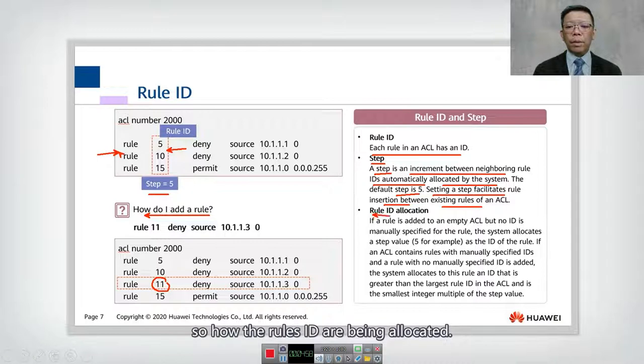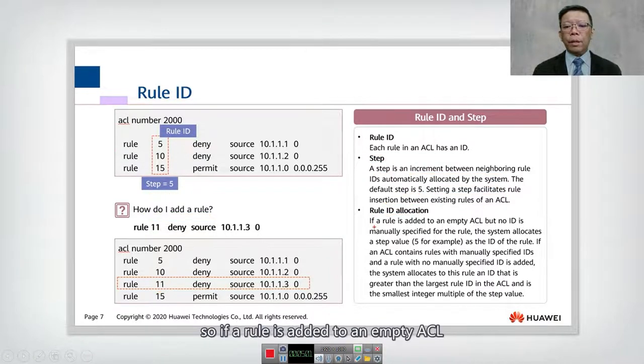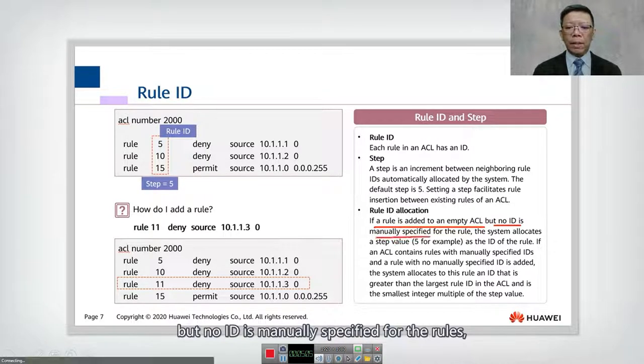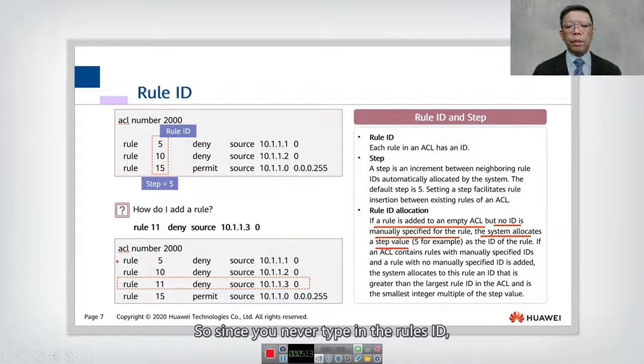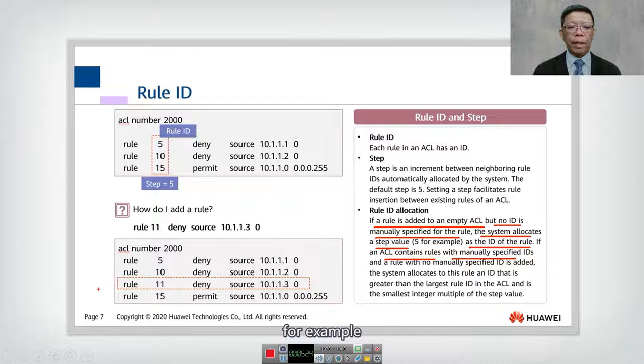So how the rules ID are being allocated? So if a rules is added to an empty ACL but no ID is manually specified for the rules, the system allocates a step of 5, which means that you can just type rules denied. So since you never type in the rules ID, it will add 5 for you automatically. As the rules ID, if the ACL contains rules with manually specified ID, for example, here I have rules number 11, then it will add it for you.